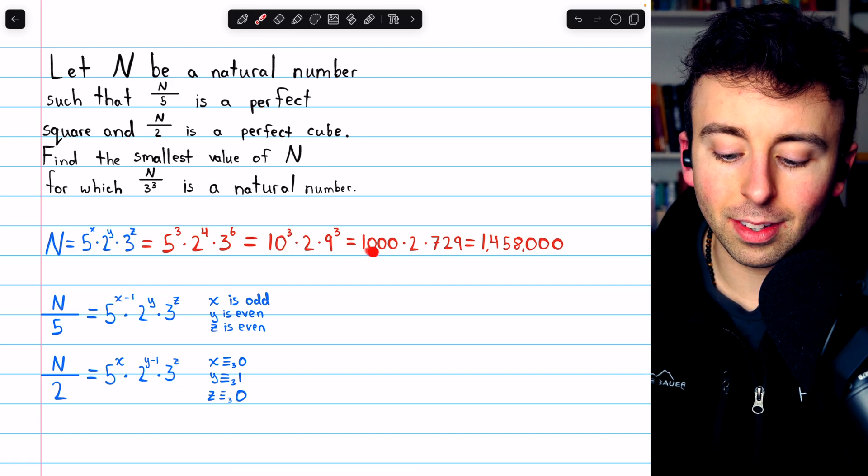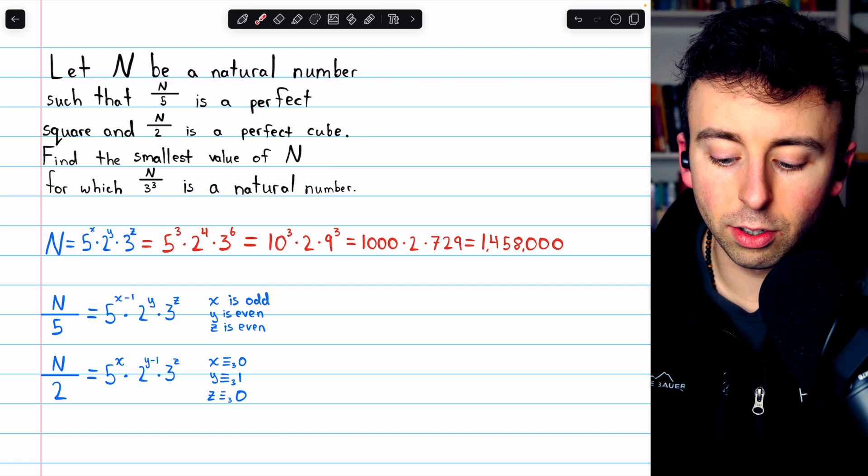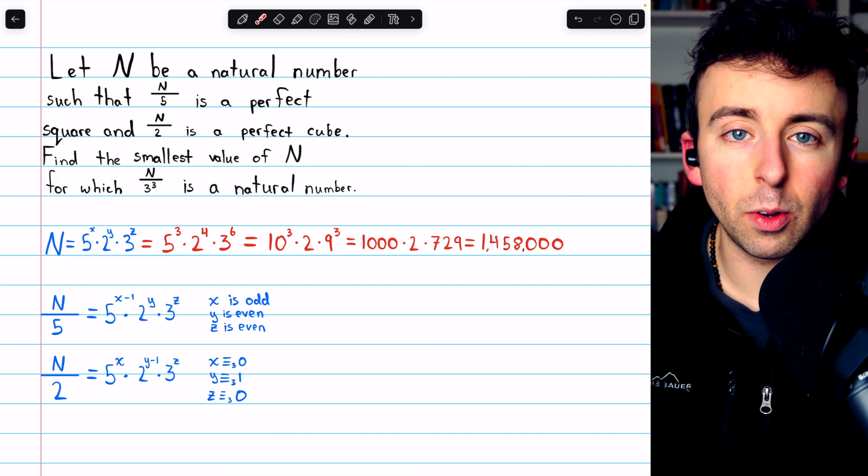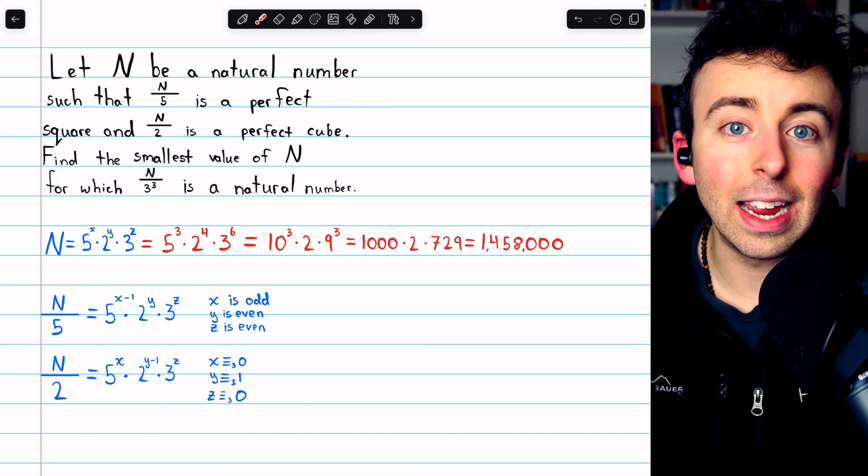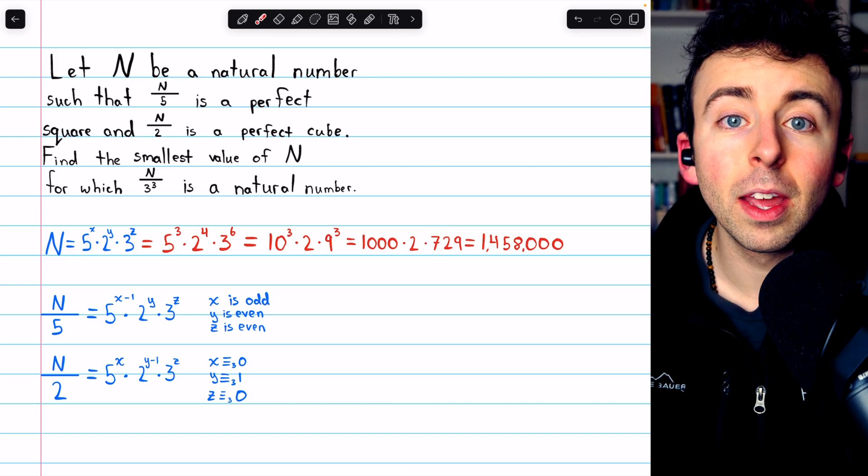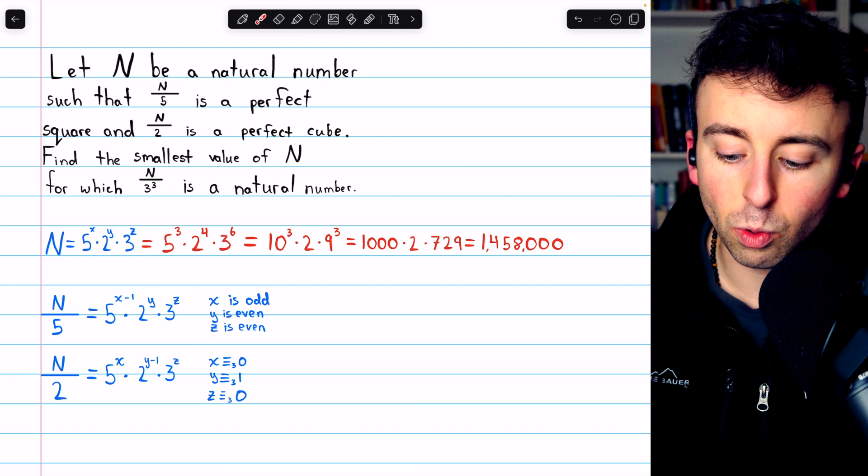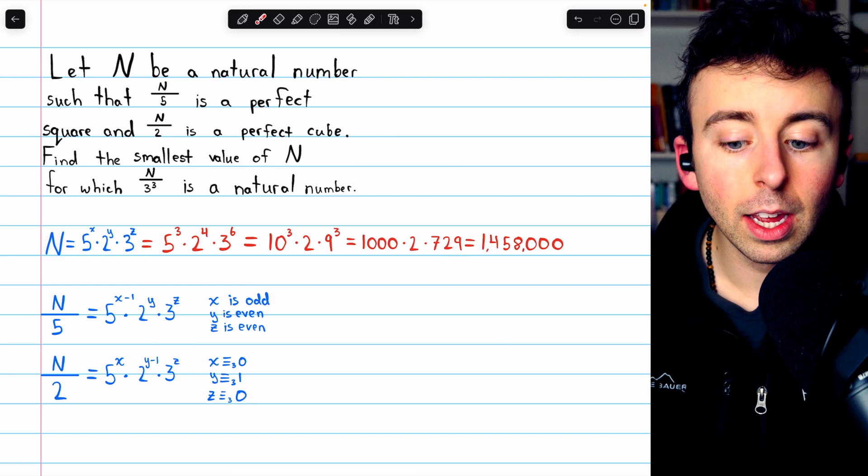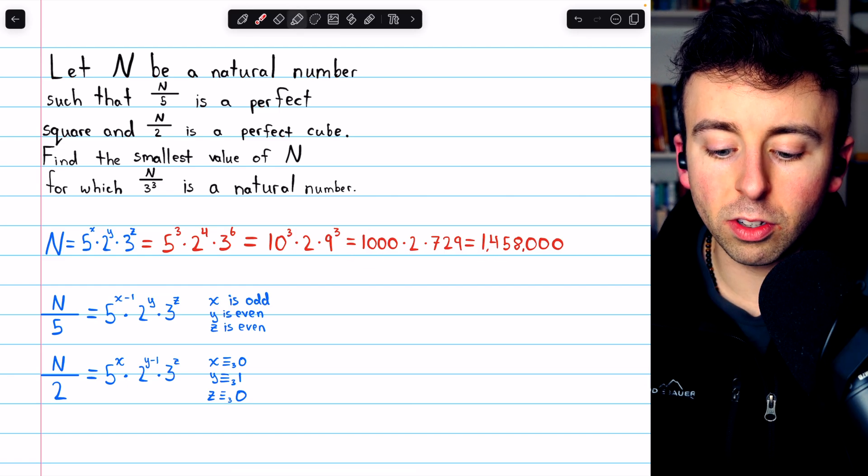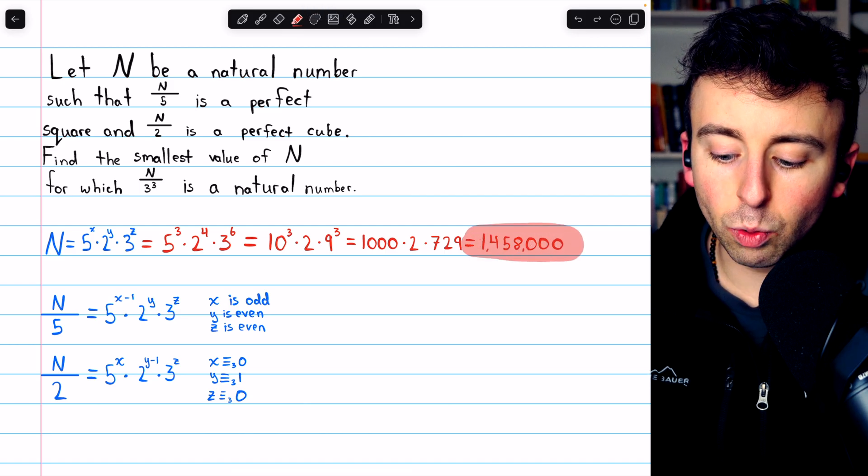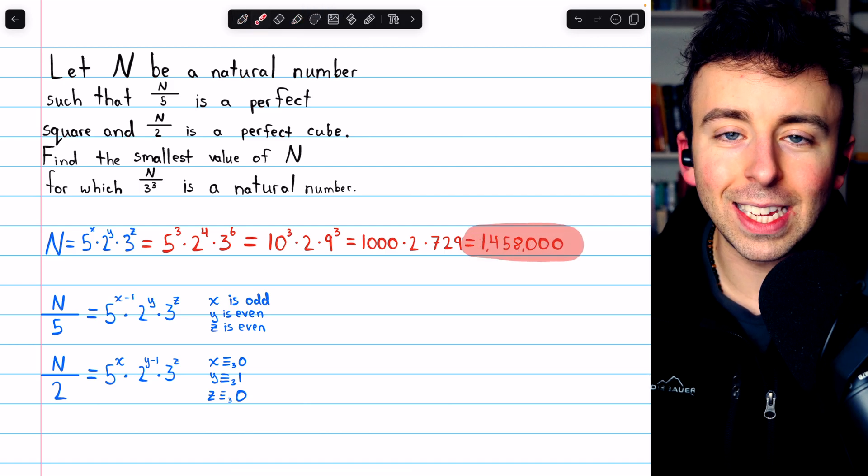Then 10 cubed is 1,000 times 2, and 9 cubed is 9 times 9, which is 81 times 9. 81 times 9 is 729. Finally, just double 729. That's pretty easy. That's just 1,458. And then multiply that by 1,000, which just amounts to appending three zeros to the end. Final answer, then, is 1,458,000.